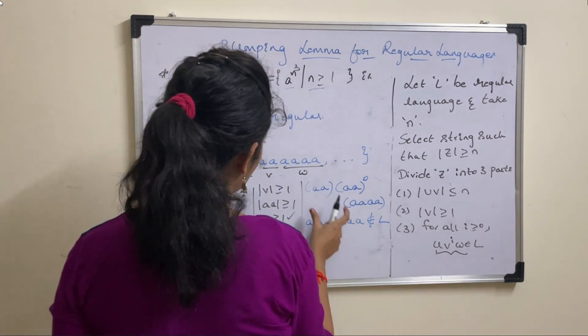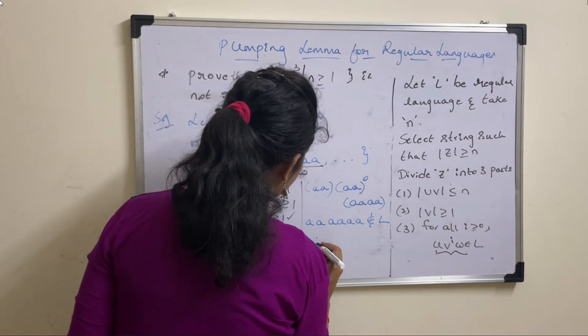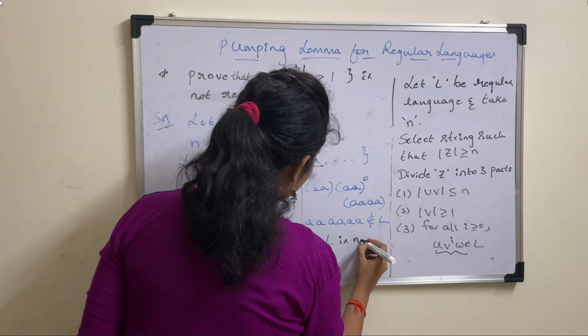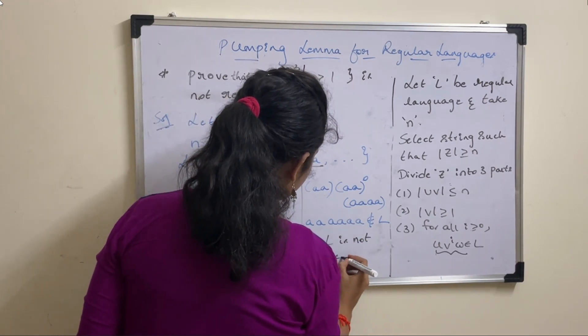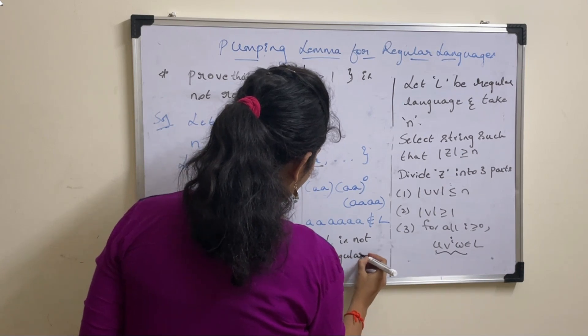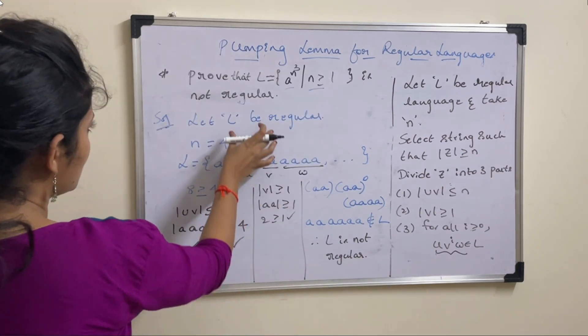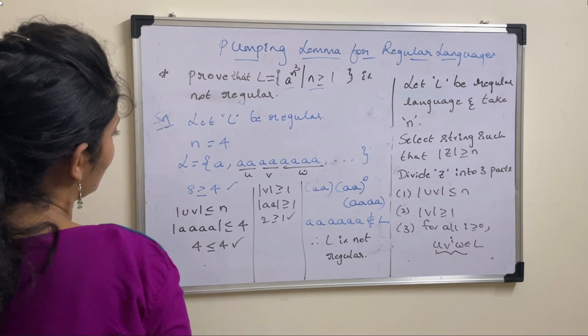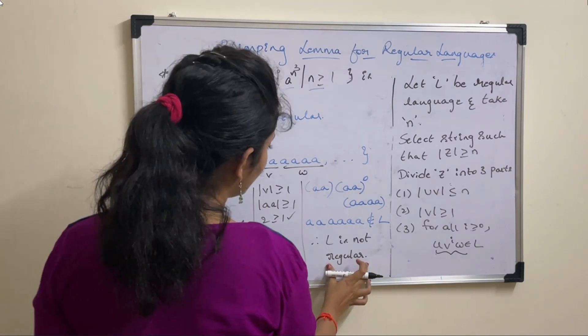So as the string is not a part of this language, we can say that L is not regular. So initially we assumed L value as a regular language. As we prove contradiction here,